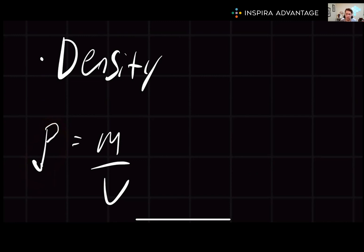It can be calculated using the formula rho equals m over V, where m is the mass and V is the volume. The SI unit for density is kilograms per cubic meter, so we're using meters and kilograms.